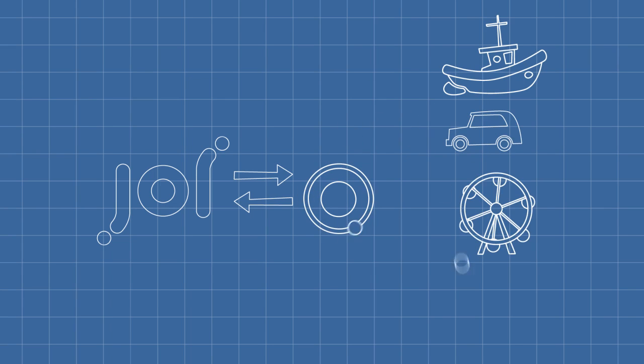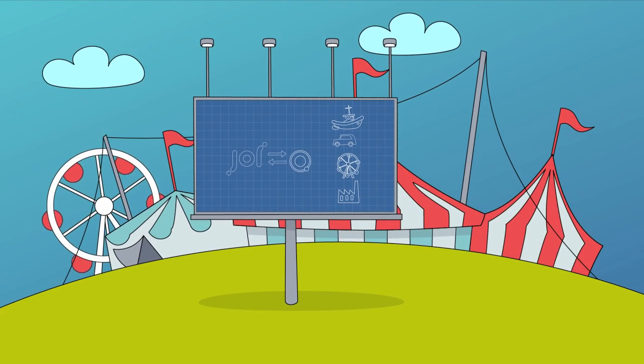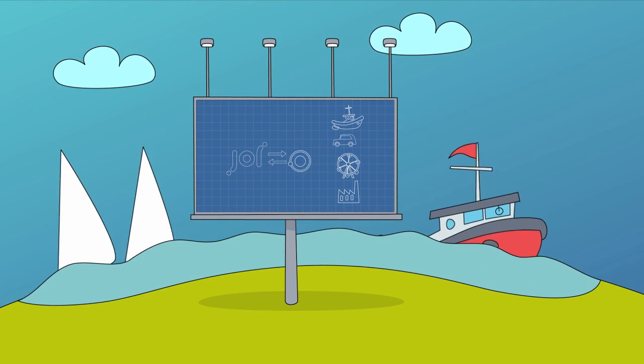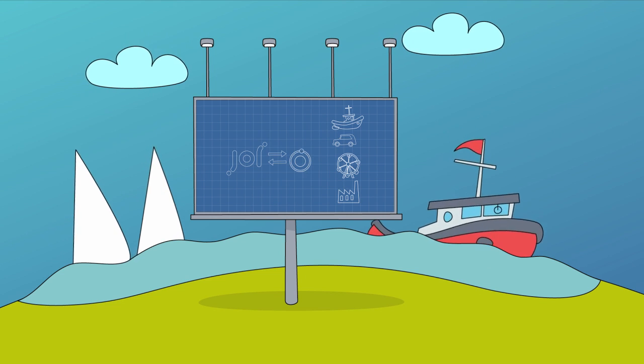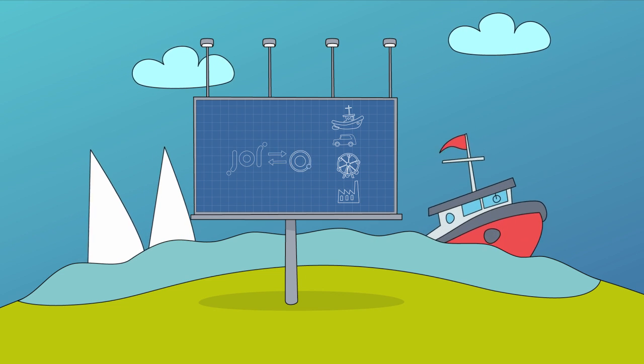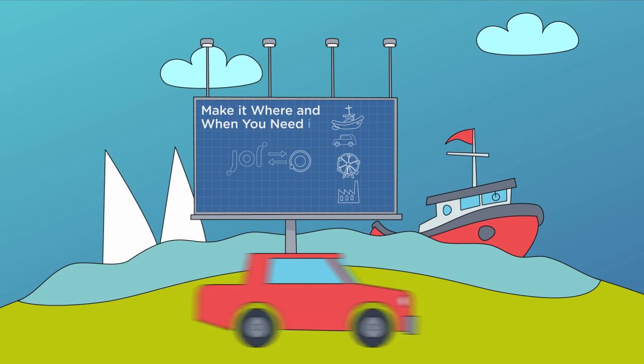Better still, Joy makes hydrogen where and when you need it, on site or on board. So instead of spending millions storing it and distributing it, you just make it where and when you need it.